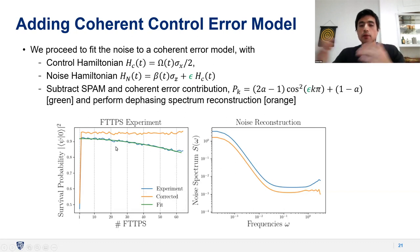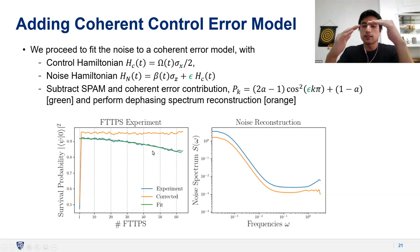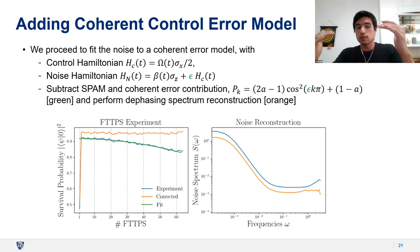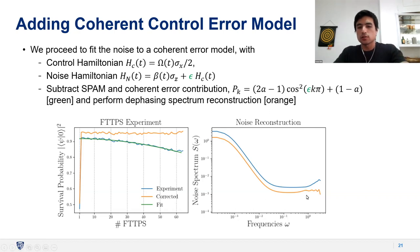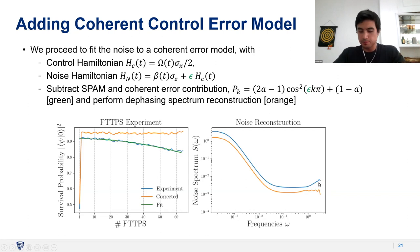By subtracting both the SPAM and control error contributions from the FTTPS experiments, the survival probability improves. Reconstructing the noise spectrum after this correction gives a lower spectrum that is also more flat at high frequencies, confirming that the high-frequency feature was indeed due to coherent control errors rather than dephasing noise.